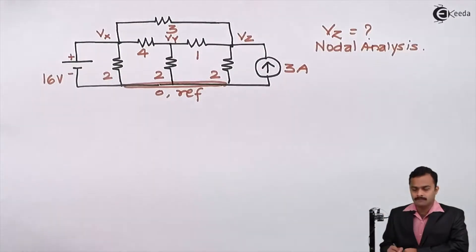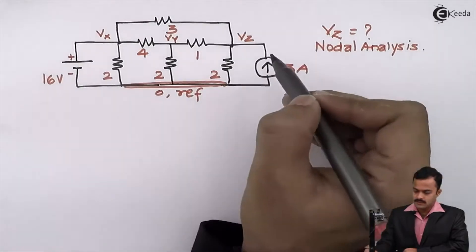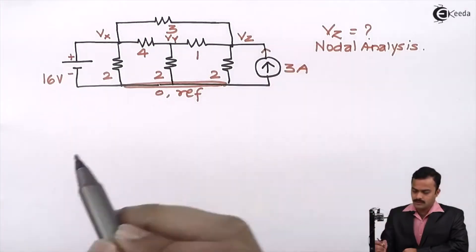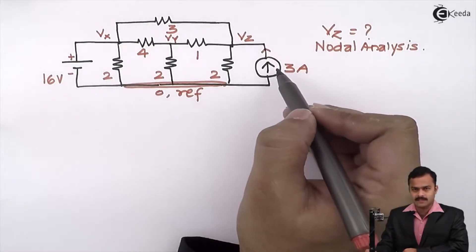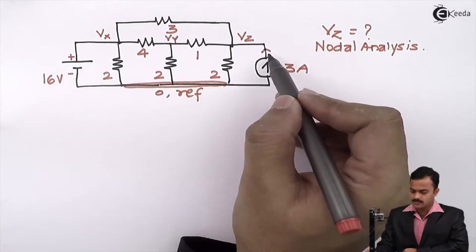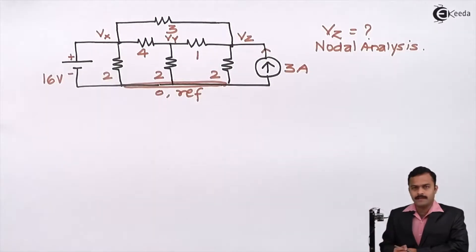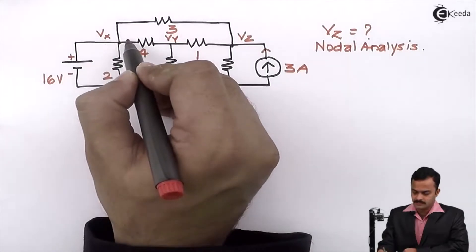We have already marked all the nodes. Let's mark all branch currents. The current source is given, so the current direction for that branch is the same as the current source — upward — and for the remaining branches I will consider random current directions.